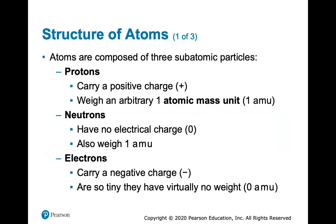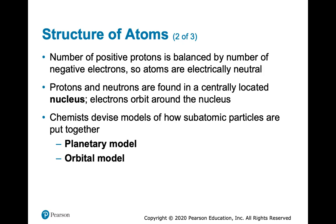Atoms are composed of three subatomic particles: protons, neutrons, and electrons. Protons carry a positive charge and weigh about one atomic mass unit (AMU). Neutrons have no electrical charge and also weigh about one AMU. Electrons carry a negative charge and are so extremely tiny they have virtually no mass. The number of positive protons is always balanced by the number of negative electrons, so atoms are electrically neutral unless they're an ion. Protons and neutrons are found in the nucleus, and electrons orbit around the nucleus in what we call the atomic electron cloud.